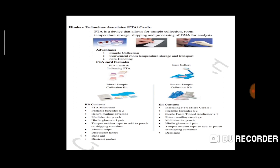The FTA Micro Card has fillable barcodes. You will need: lancet, nitrile gloves, tamper evidence tab and push shipping container, desiccant, multivariate pouch, and the FTA card itself.